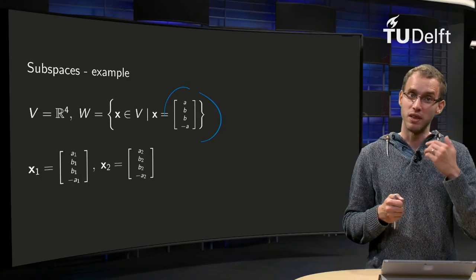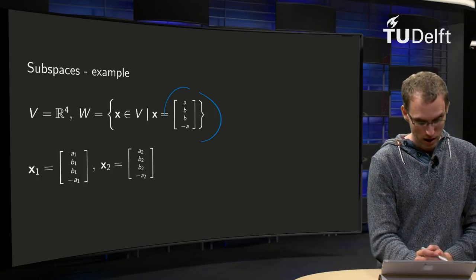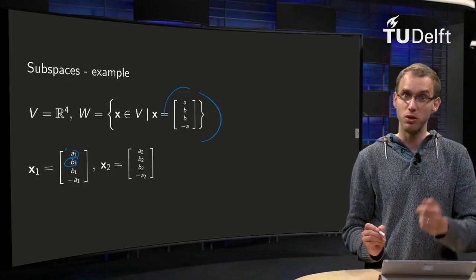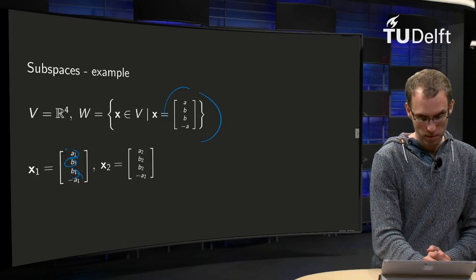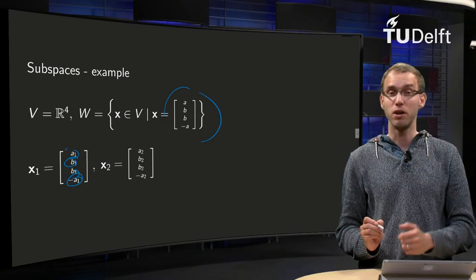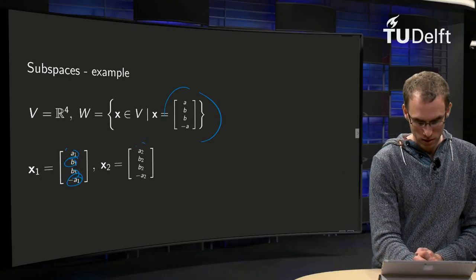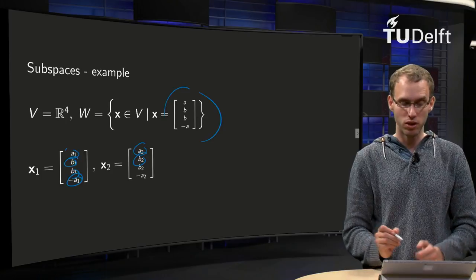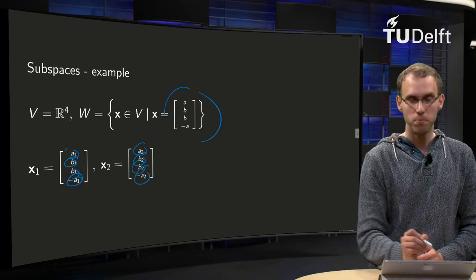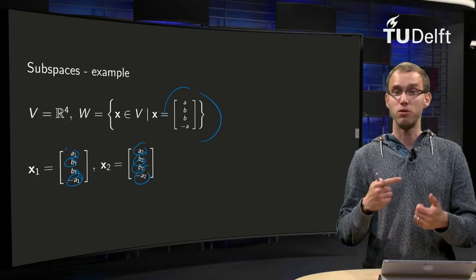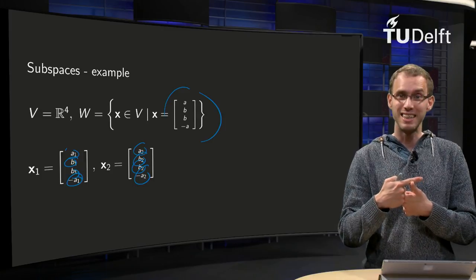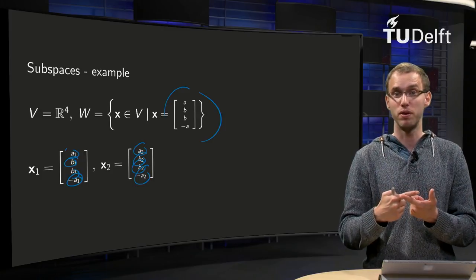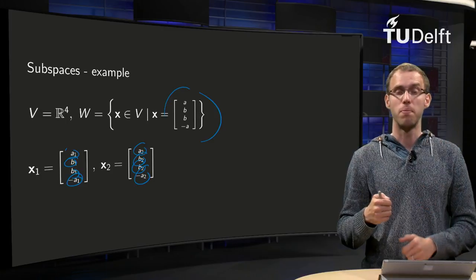We take a vector x1 with first two components A1 and B1, and that fixes the other two components to be B1 and -A1. And we take another vector x2 with first two components A2 and B2, which fixes the others to be B2 and -A2. Then we have to check whether the sum is again in W, and whether a scalar multiple of one of them is still in W.